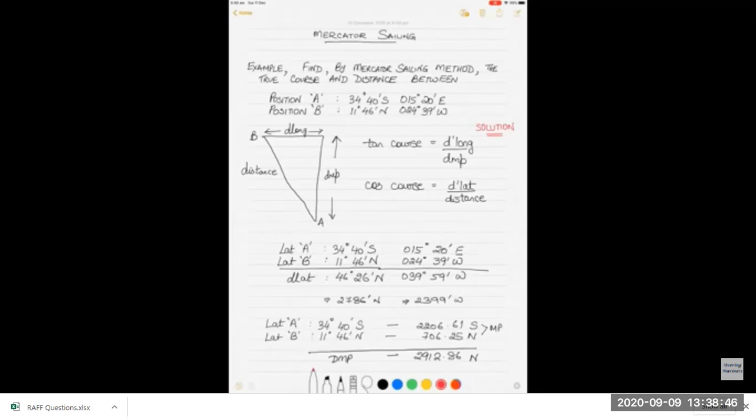We have to do this by Mercator sailing because we use this when the distance is more than 600 miles and the earth is not considered as flat but as a spheroid.